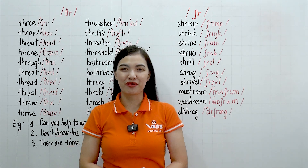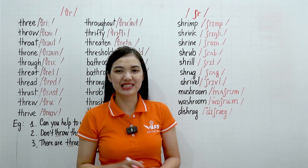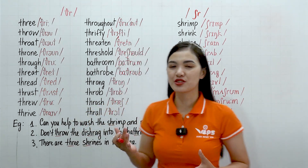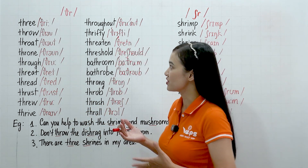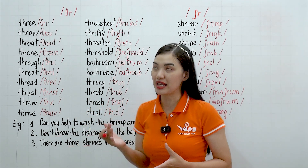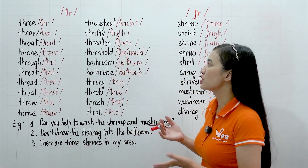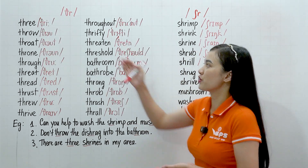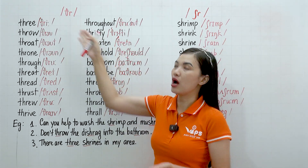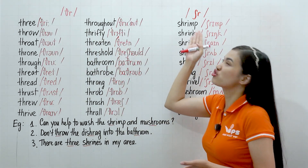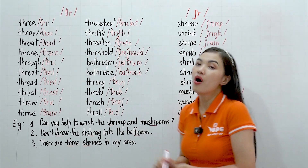Hi there, this is Mary from VIPS TV. Let's continue with the consonant clusters — today we're going to do the THR and SHR sounds.